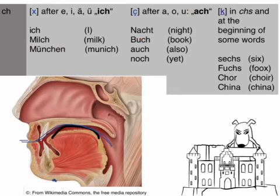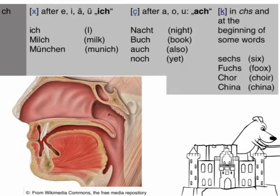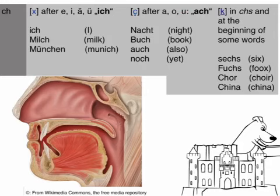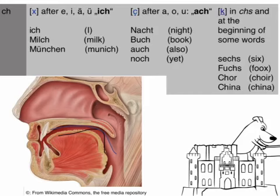Now let's have a look at the next part to see the difference. It's called the ach-sound because we have it after the vowels A, O, and U. Your tongue is really at the back and the air goes here. Ach. You have to feel the difference in your tongue if this sound is difficult for you. Examples: Nacht, Buch.